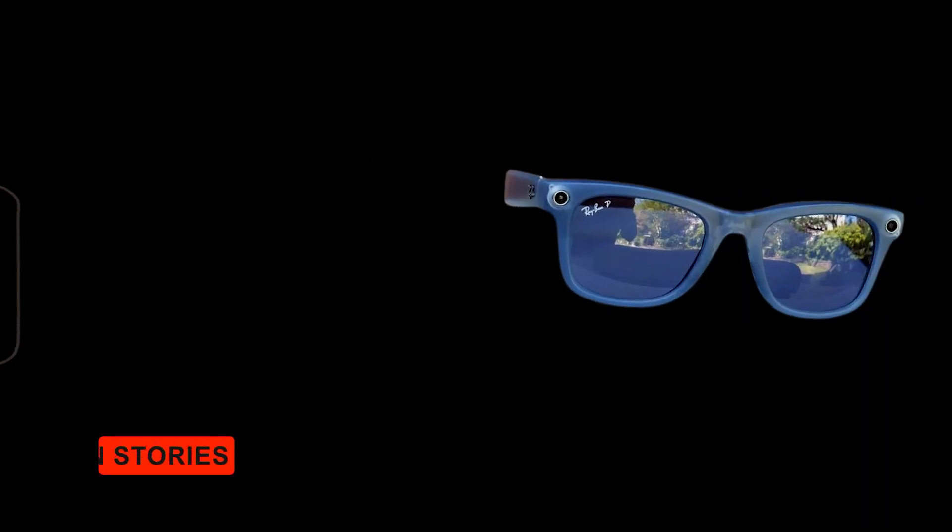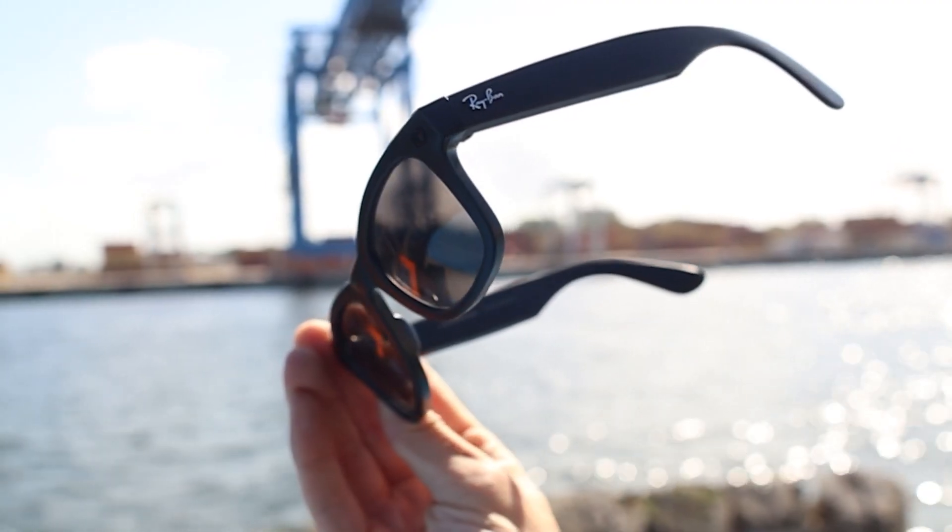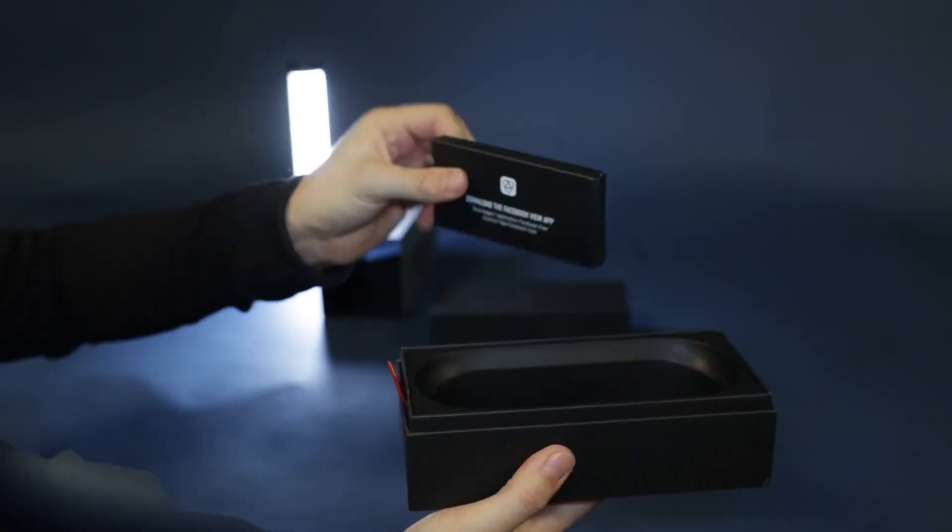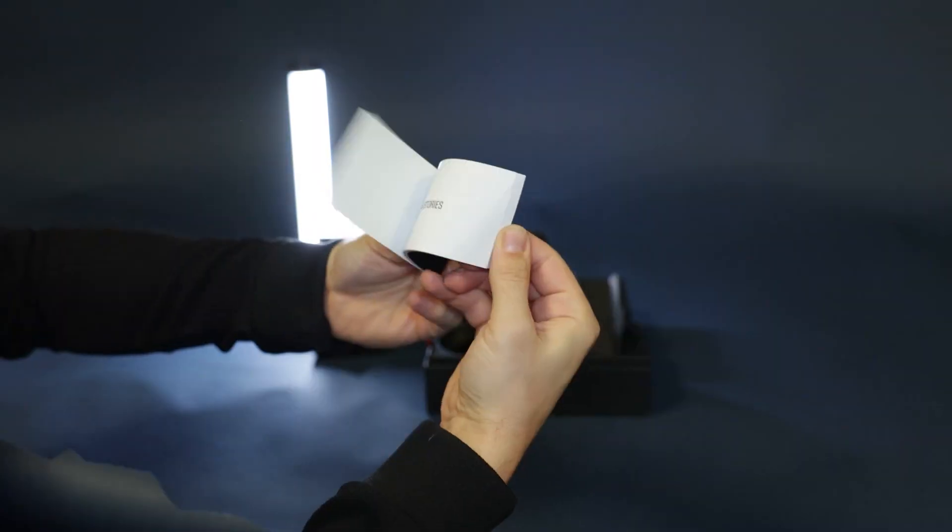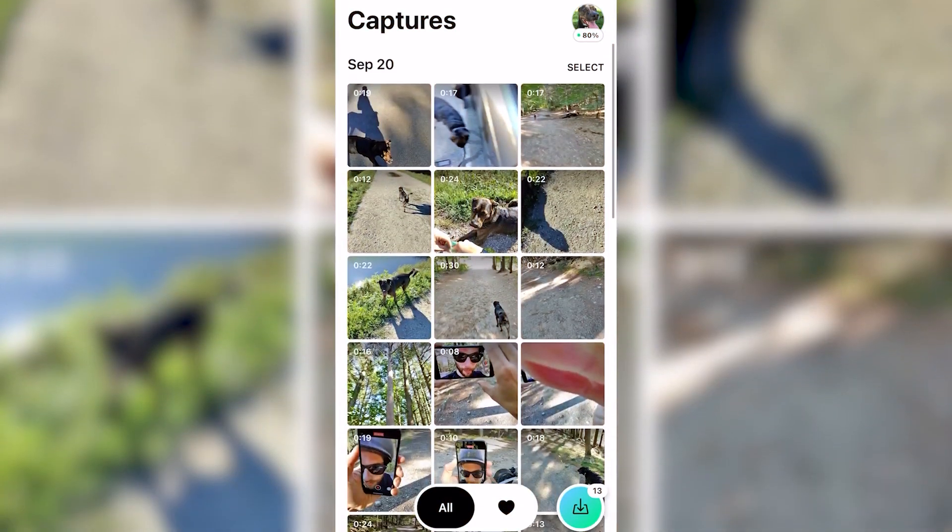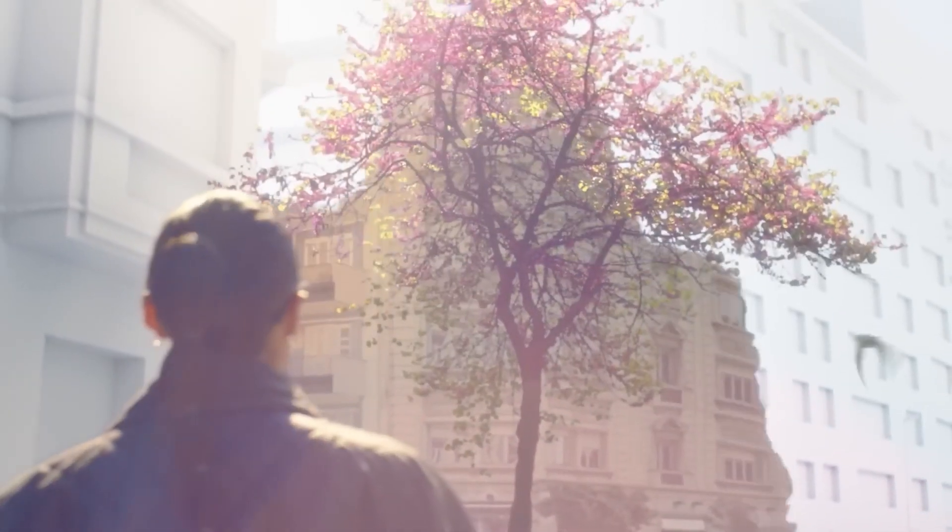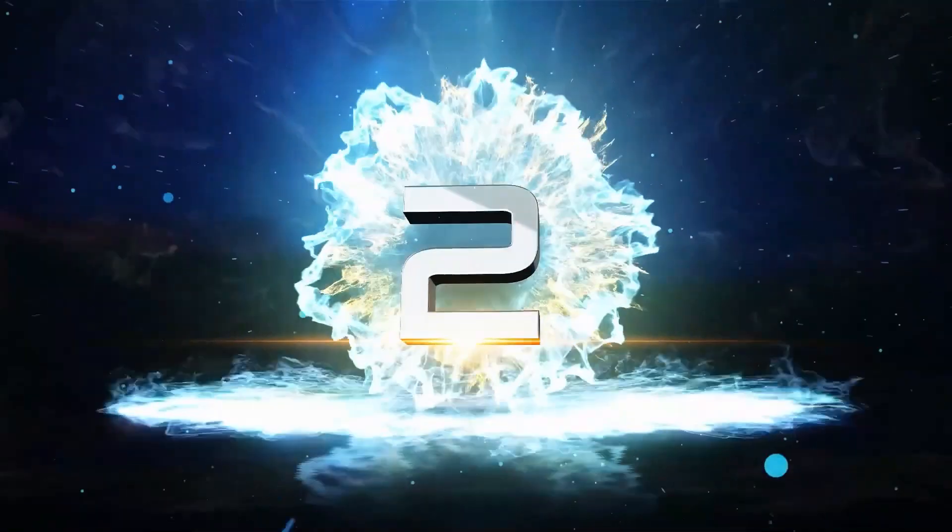Ray-Ban Stories. These aren't just stylish sunglasses. They're equipped with dual 5MP cameras integrated into the frame. They allow for hands-free photo and video recording from a first-person perspective. With touch controls and a discreet light indicator that signals recording, they blend high fashion with high tech.